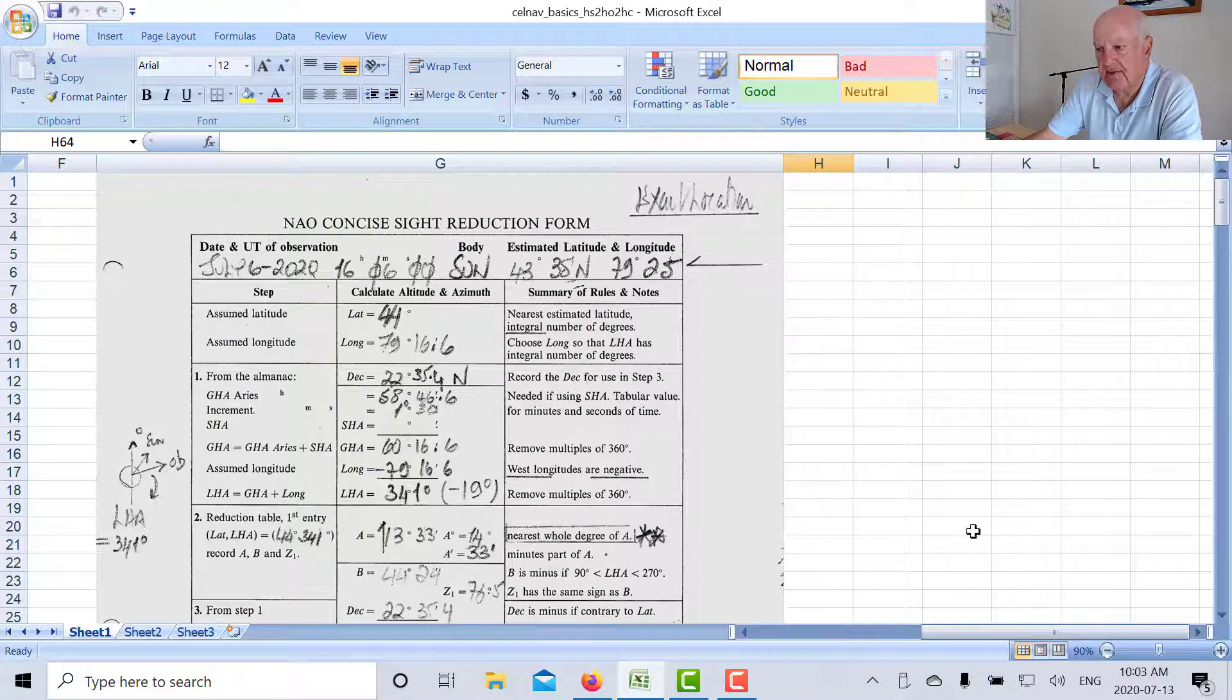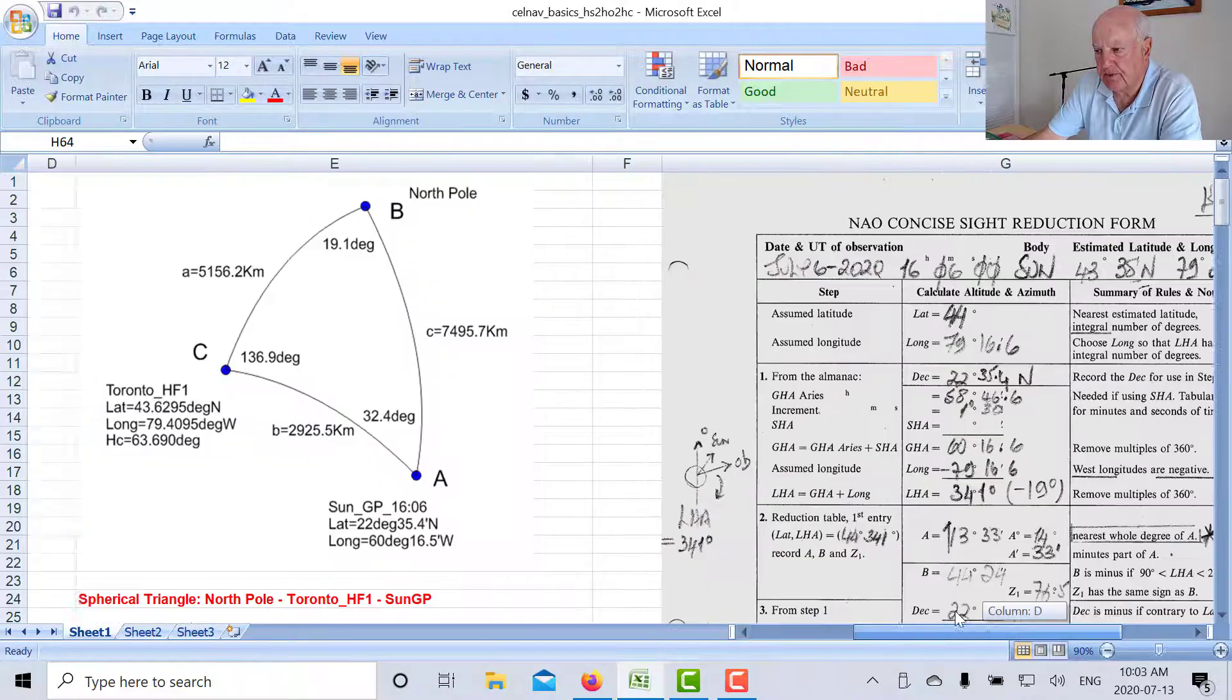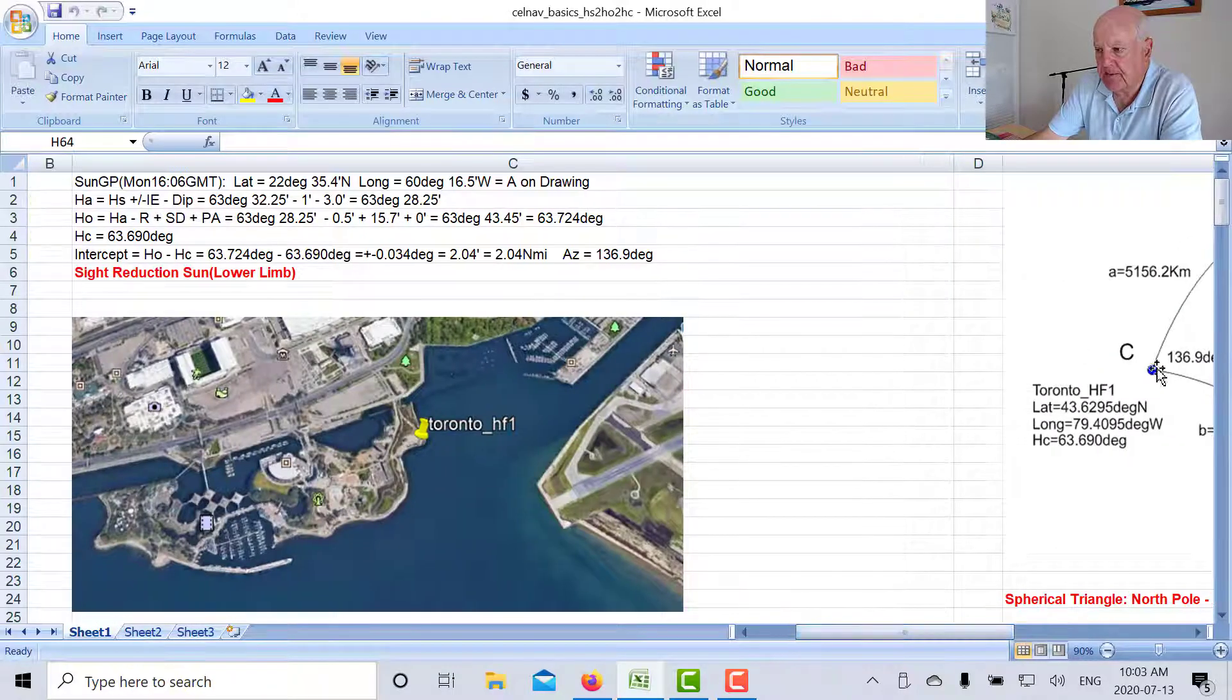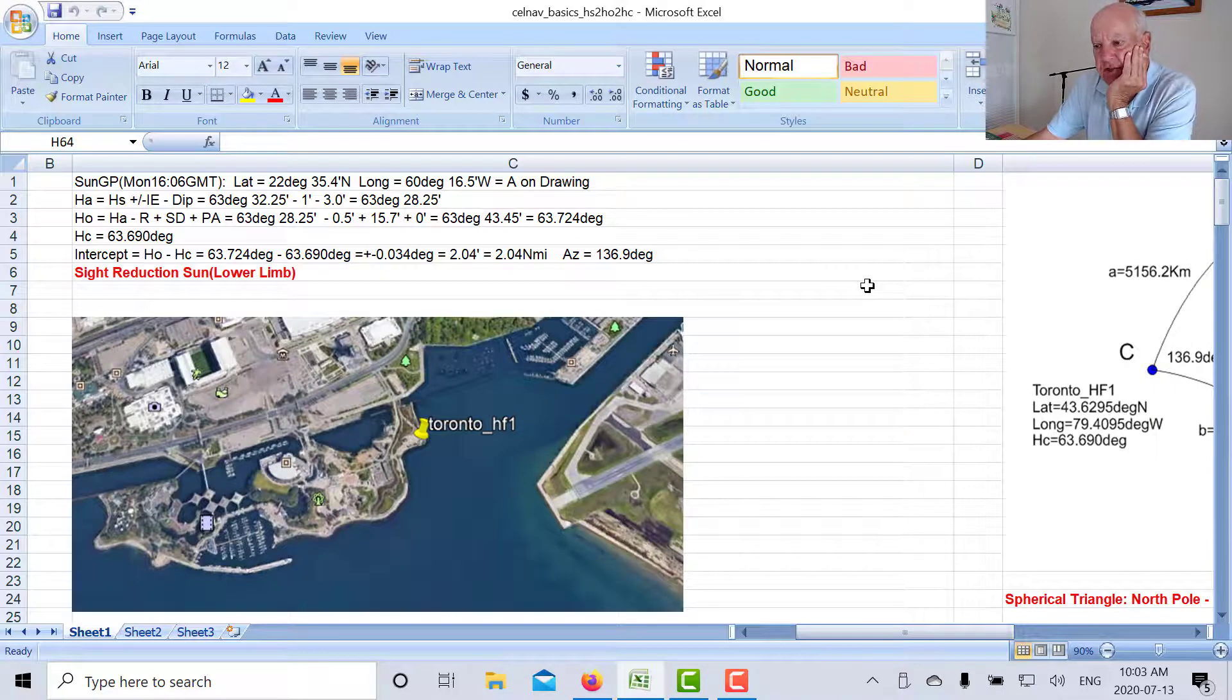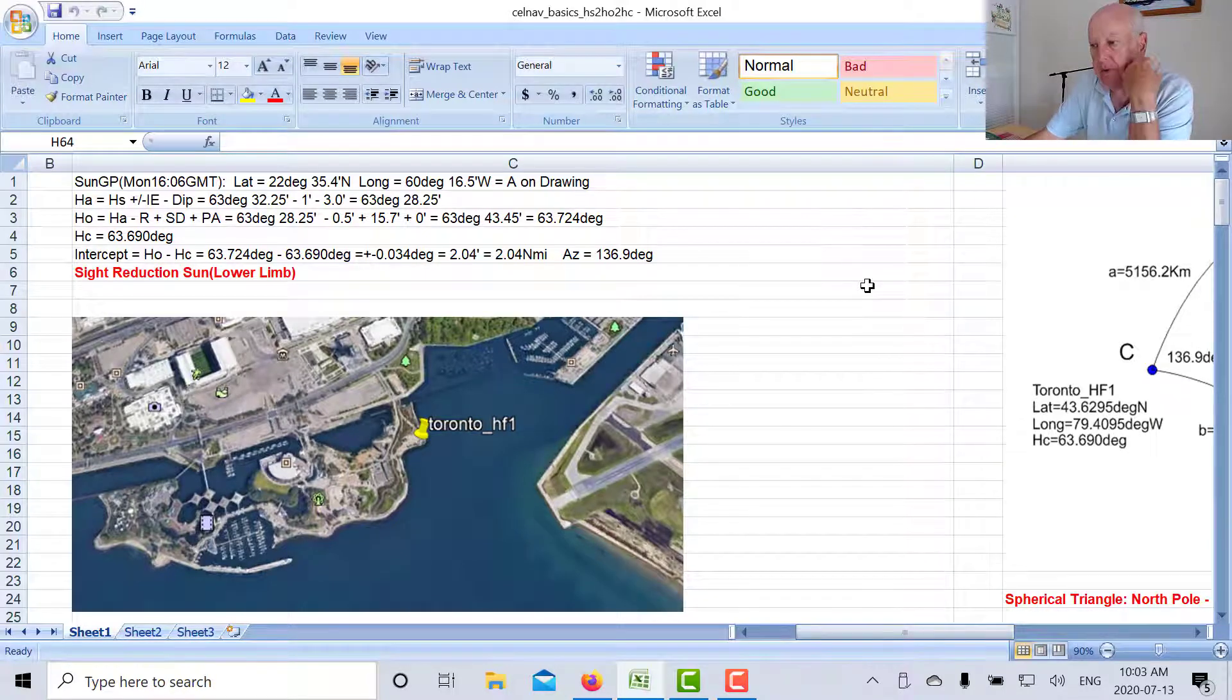So then just to summarize, in the last week we looked at HS, we looked at HA, we looked at HO, and we looked at HC.